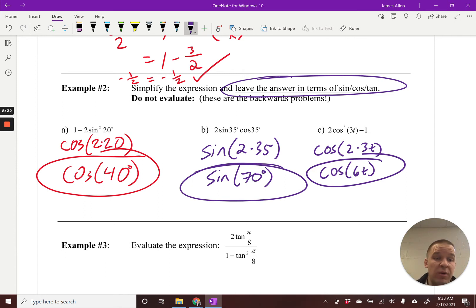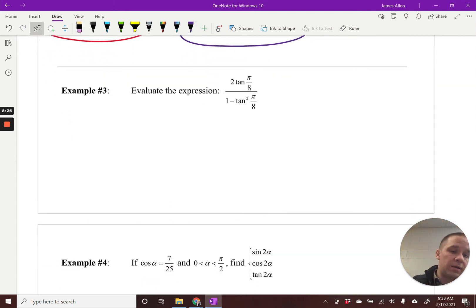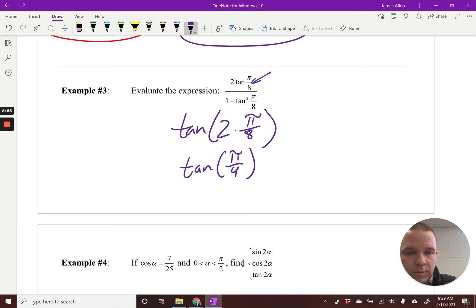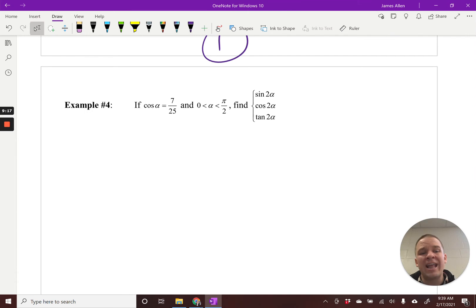This next one says evaluate the expression. We are going to get an exact value for this one. This here is the tangent double angle formula. What's my angle here? My angle is π/8. That's my theta. So I'm going to have tangent of 2 times π/8. That's tangent of π/4, which is a 45 reference if you like degrees better. That equals 1. It's in my first quadrant.